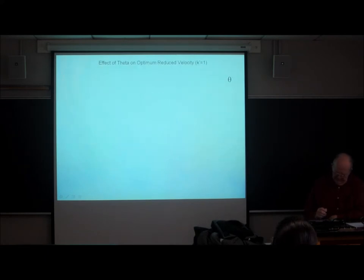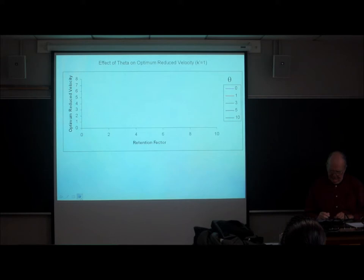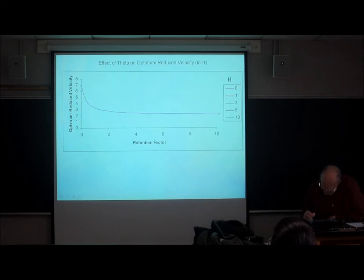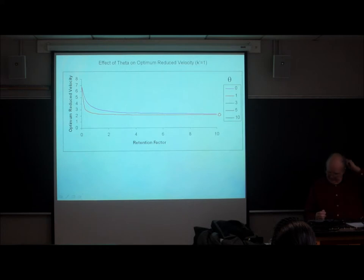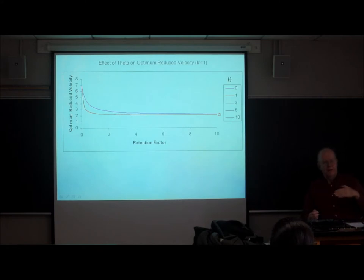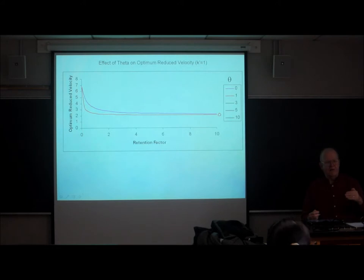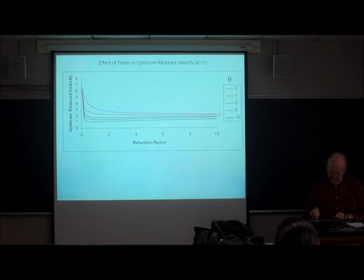The next thing to consider is the effect of film thickness on the reduced velocity at the optimum. Here's the curve for a film thickness of zero, then a thicker film. A thicker film lowers the optimum reduced velocity — the thicker the film, the slower you have to go to be at the optimum, and it just gets worse and worse.